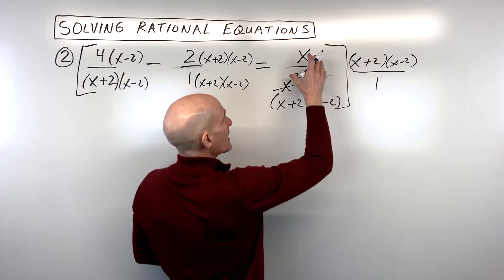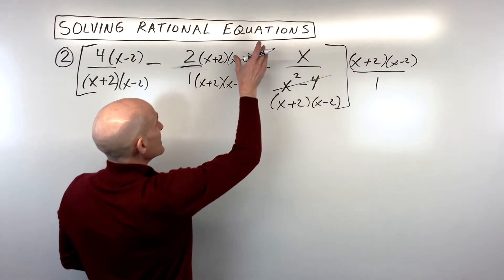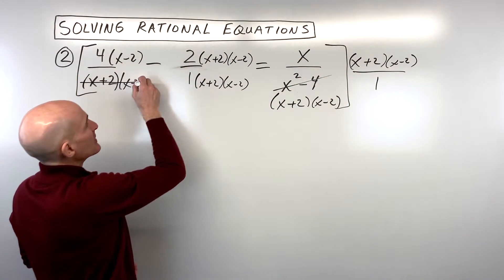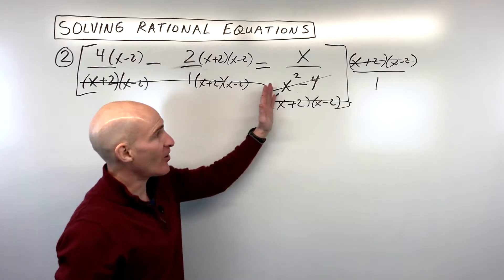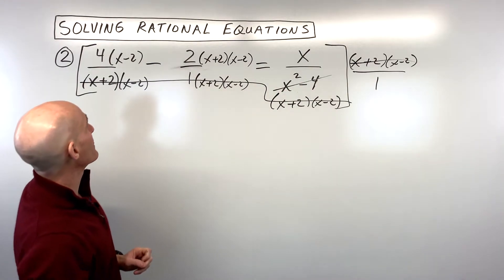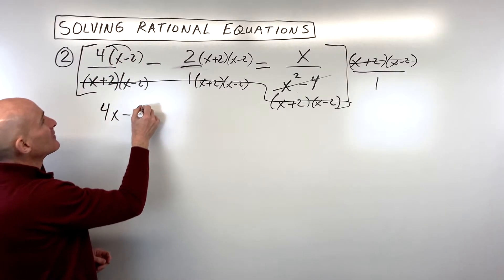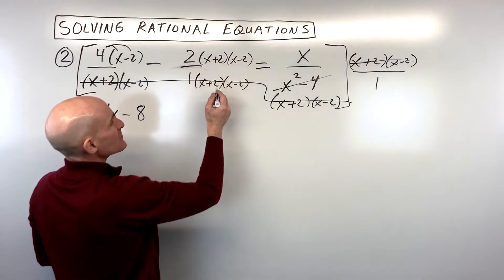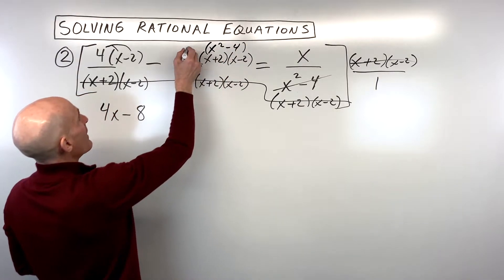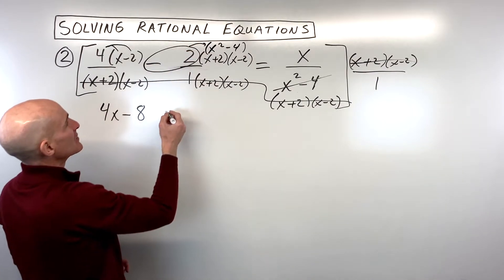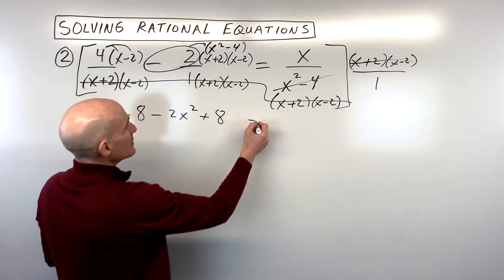When you multiply the common denominator to each fraction, the x plus 2 and x minus 2 in the numerator cancel with the x plus 2, x minus 2 in the denominator — same thing for each fraction. So we end up clearing the denominators. We just have to deal with the numerators now. So let's simplify: we've got 4x minus 8. And then here, x plus 2 times x minus 2 gives us x squared minus 4. This minus 2 I'm going to think of as a negative 2 distributing into the parentheses, giving us negative 2x squared plus 8 equals x.